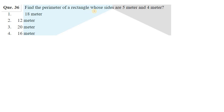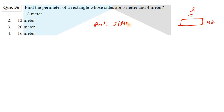Find the perimeter of a rectangle whose sides are 5 metres and 4 metres. The perimeter formula for a rectangle is 2×(length + breadth) = 2×(5+4) = 2×9 = 18 metres. So 18m is the correct answer.